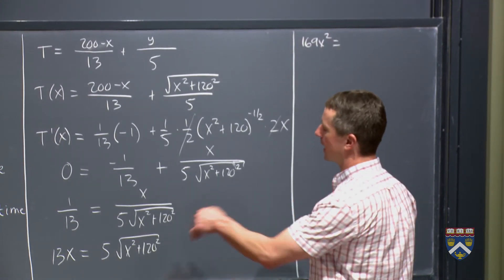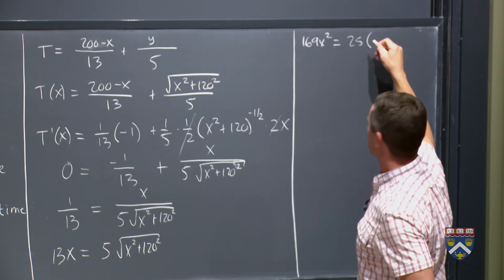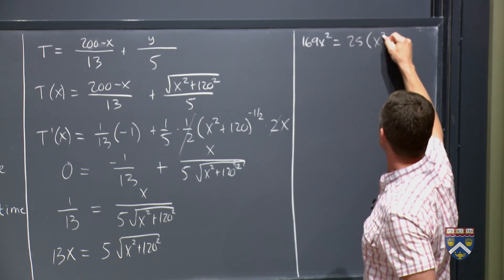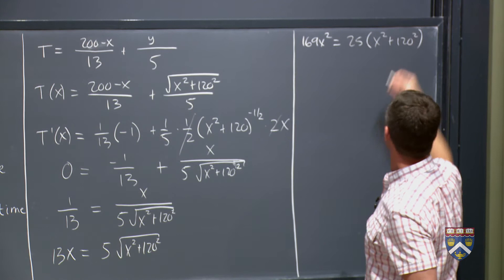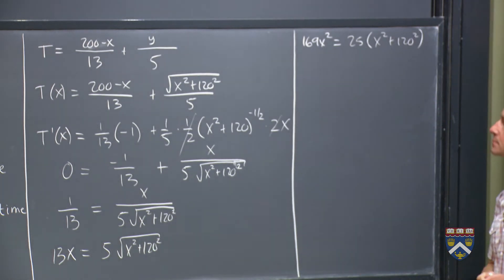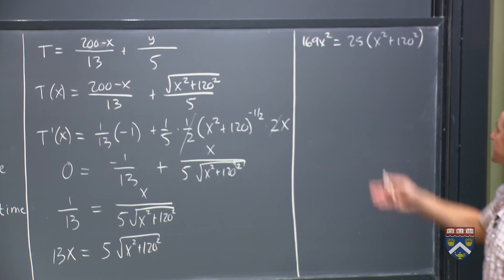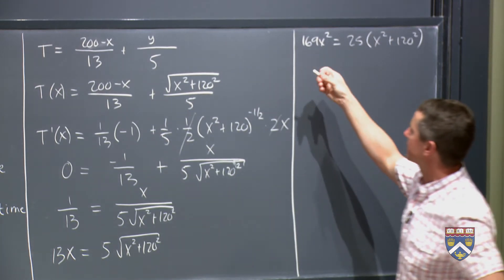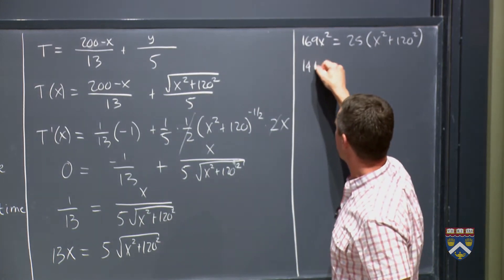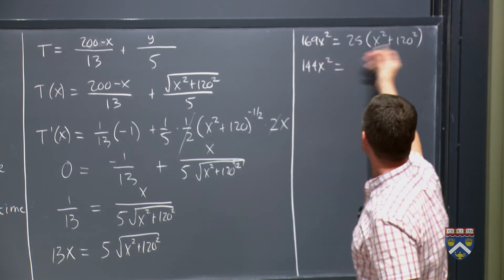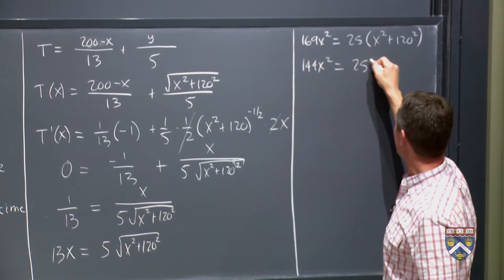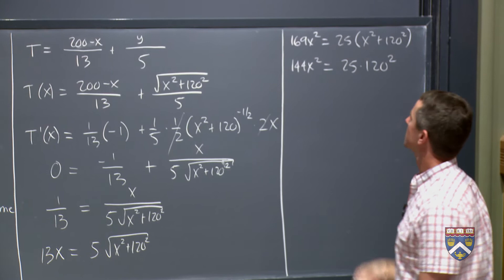And on the other side, we have to square the five, we get 25. And when we square the square root, it just goes away. That's good. Well, we don't want to have x's on both sides. So this is a 25x squared. If I bring it to this side, we get 144x squared. And what's left on this side is 25 times 120 squared.